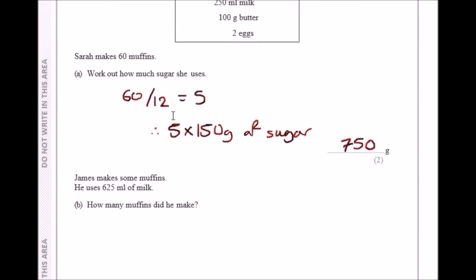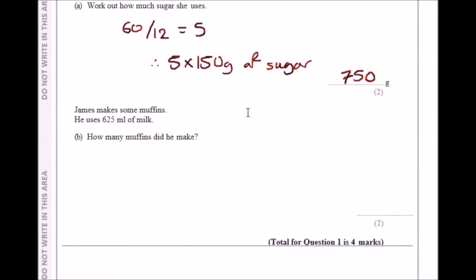What we should do is again divide them to see how many times the number of muffins he requires. We can do 625 milliliters of milk and divide it by 250 to see the ratio.